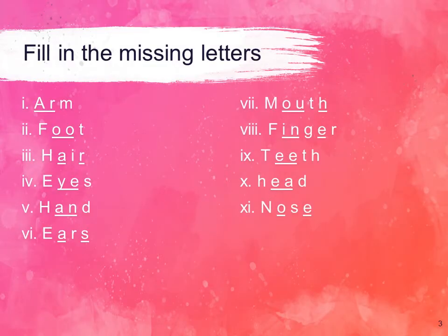The next exercise is fill in the missing letters. Children, we have read this chapter, The Belly and the Members. The various members are the various parts of the body. Name some: nose, finger, eyes, ears, hands, legs, foot — many of them. So this exercise is related to the body parts. You have to fill in the missing letters of the body part.